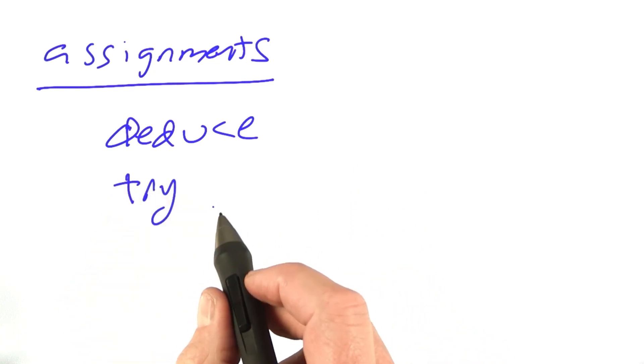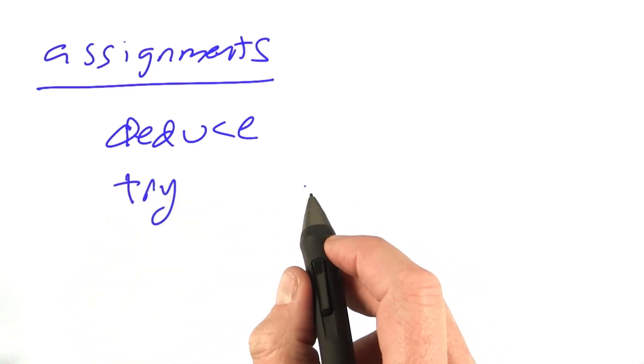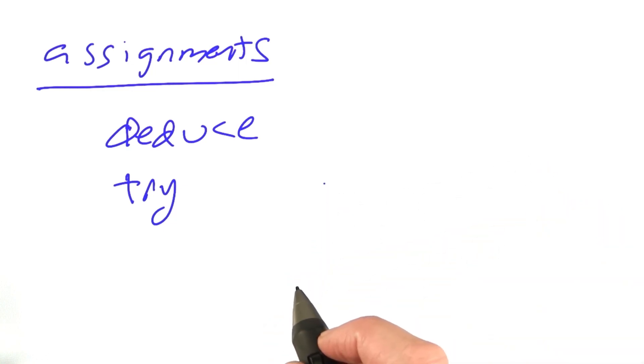Or we can just try different possibilities. Try to put the Englishman in house 1, then in house 2, then in house 3, and see what works.